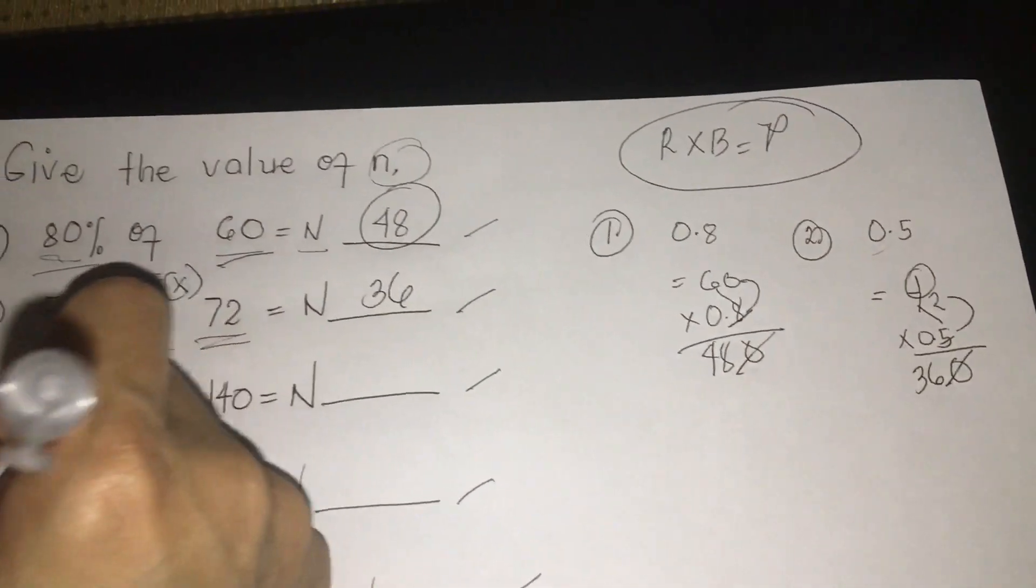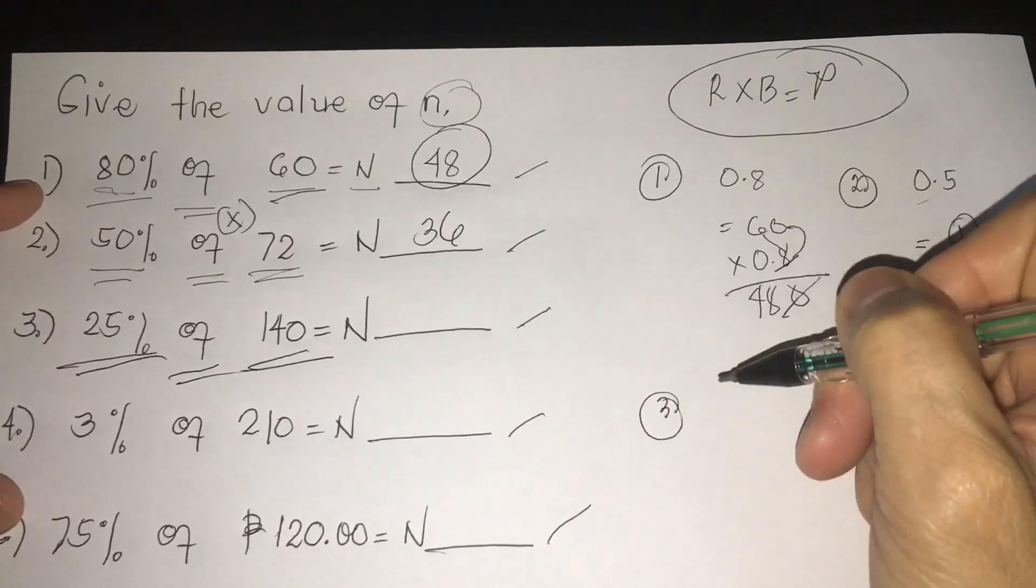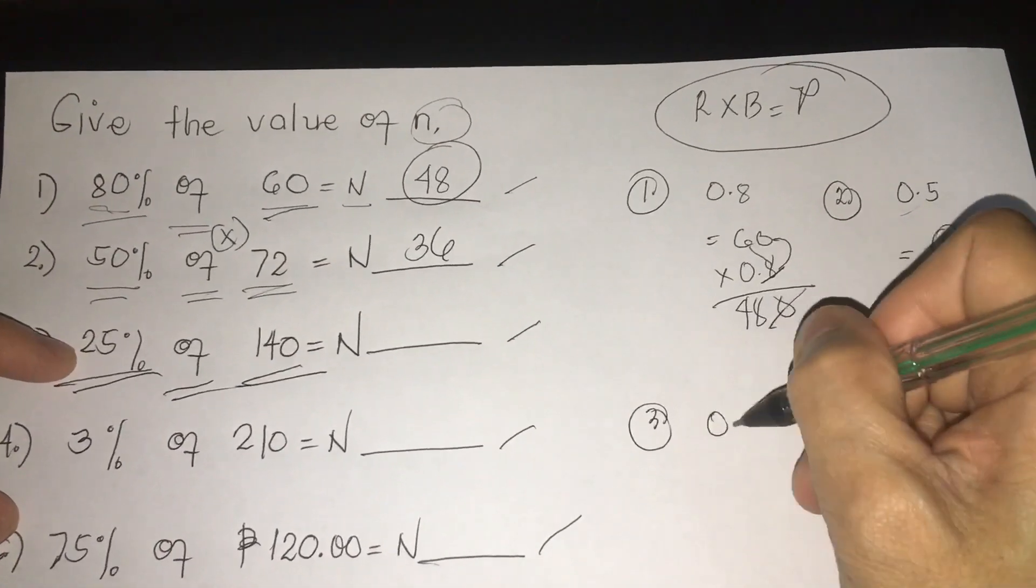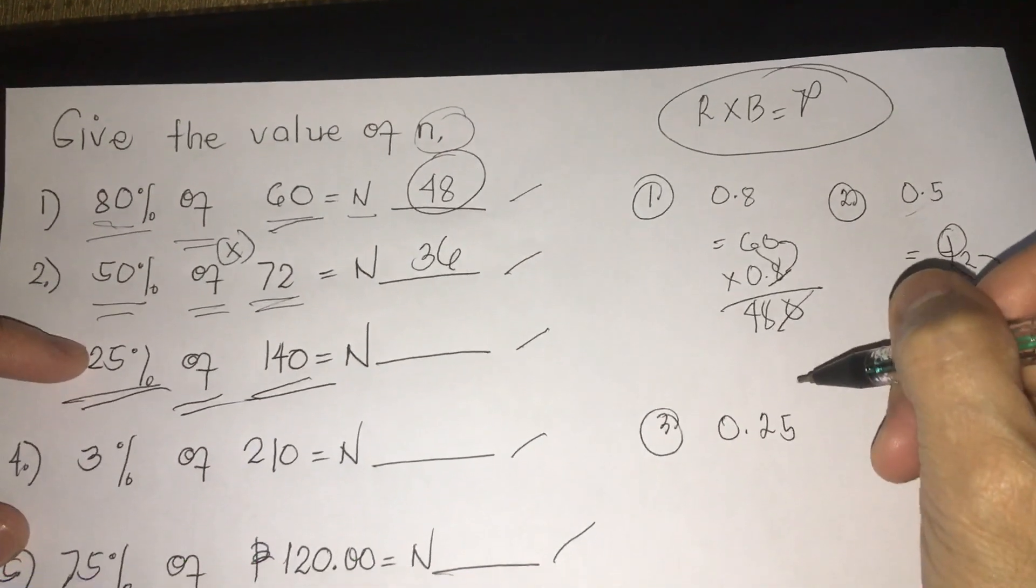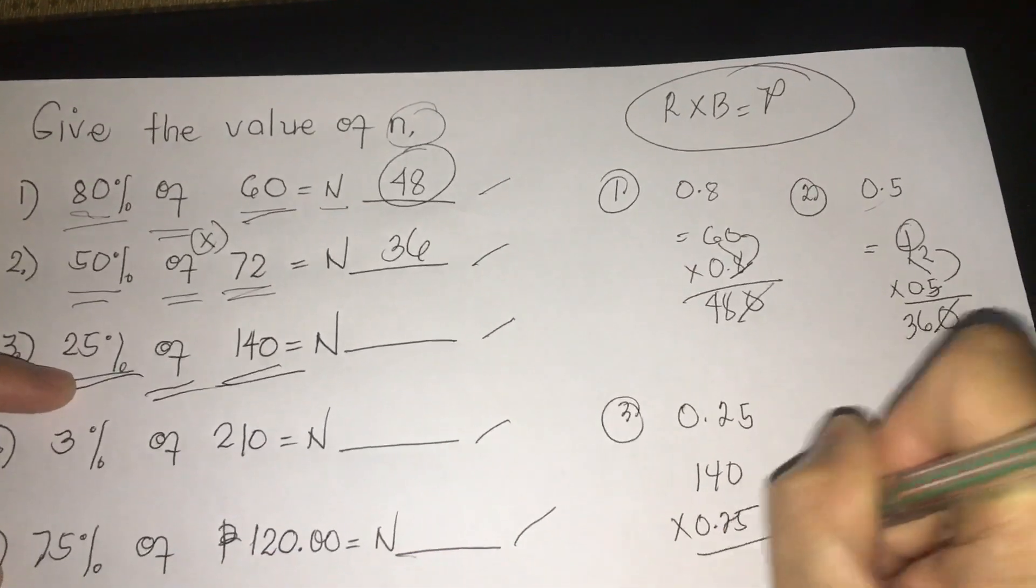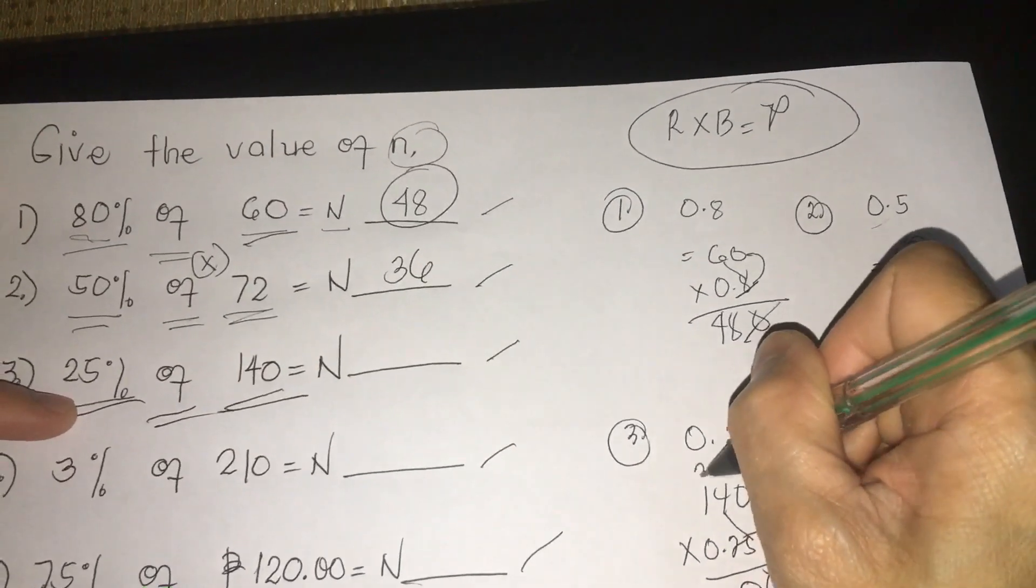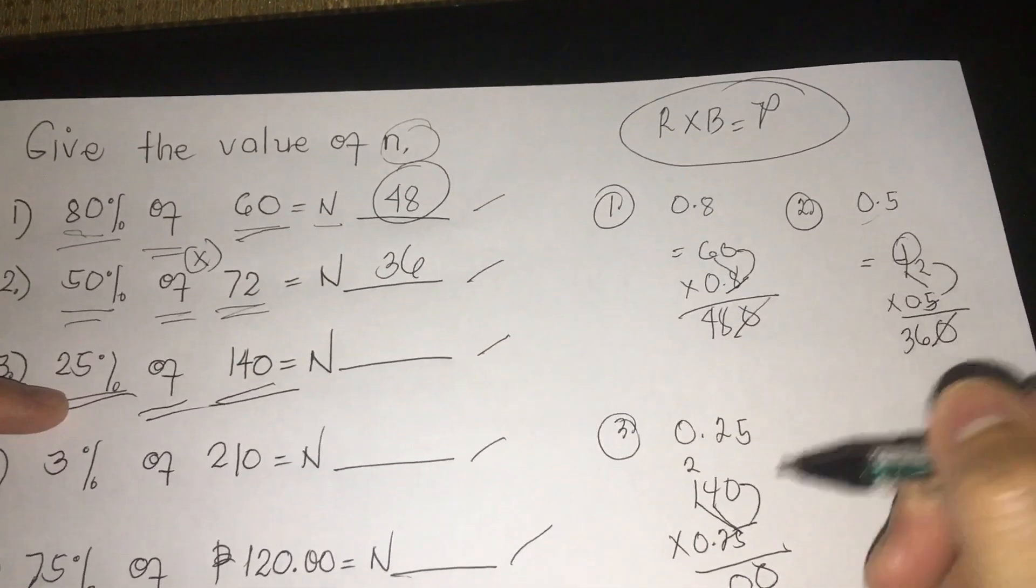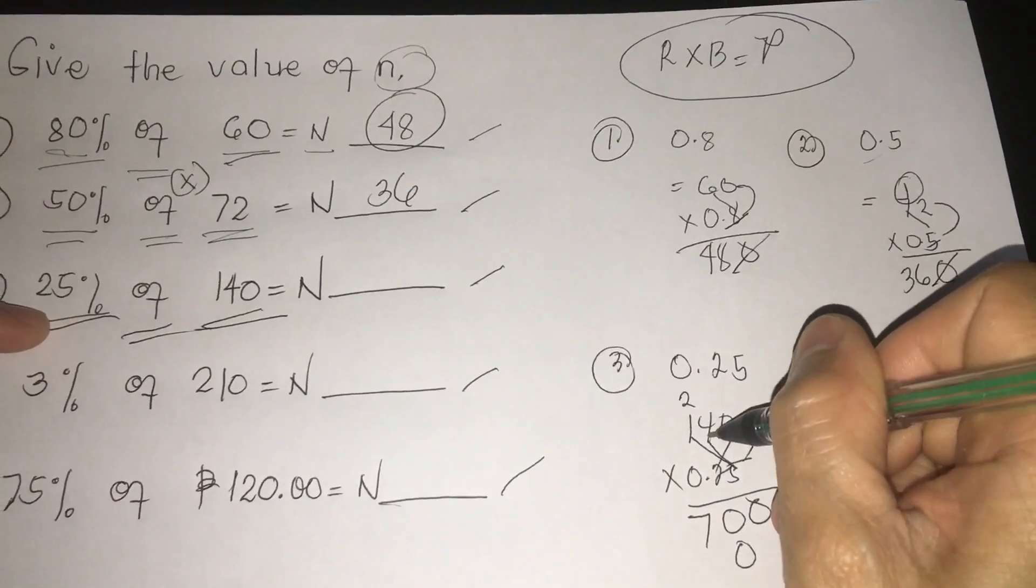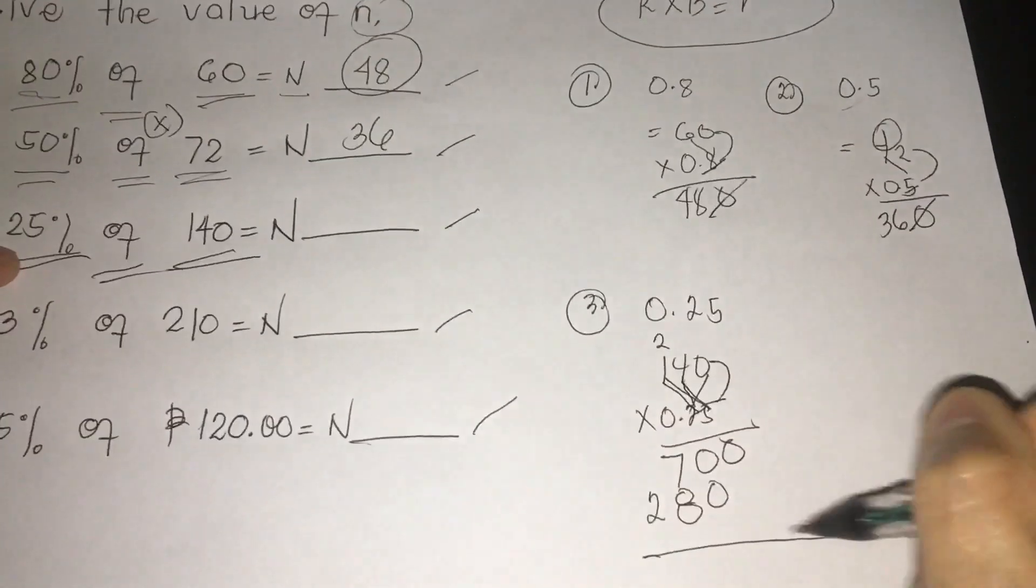Next thing is 25% of 140. Same procedure: convert percentage to decimal. So we have 25%, which is 0.25. Let us multiply: 140 times 0.25. 4 times 0 is 0. 4 times 5 is 20, so we have 2. 1 times 5 is 5, plus 2 is 7. Next thing is we are going to multiply: 0 times 2 is 0, 4 times 2 is 8, 1 times 2 is 2.